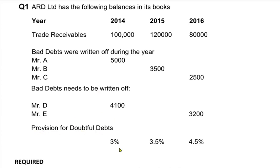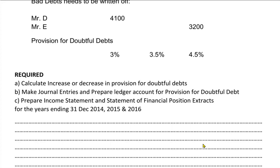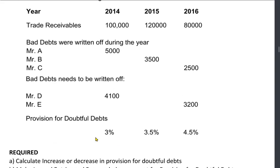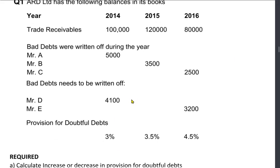In the first year we have a doubt that three percent of customers will not pay. In the second year the doubt has increased to three and a half percent, and in the last year the doubt has further increased to four and a half percent. The first requirement is to calculate increase or decrease in provision for doubtful debt — the most important part is to understand whether the doubt is increasing or decreasing on a year-on-year basis.